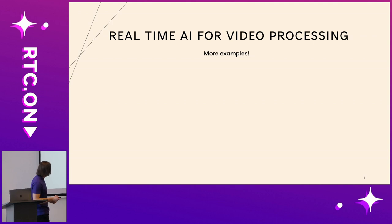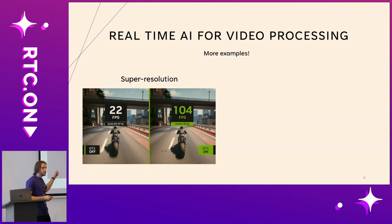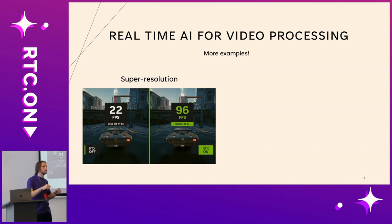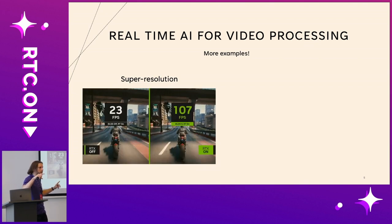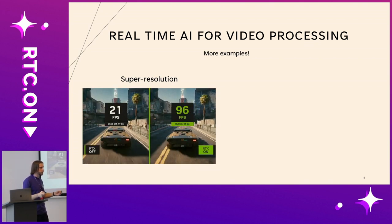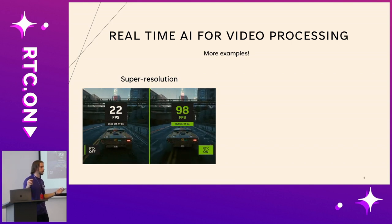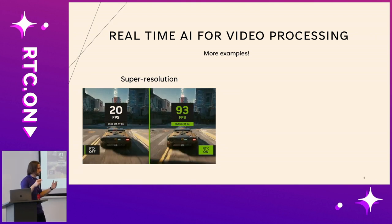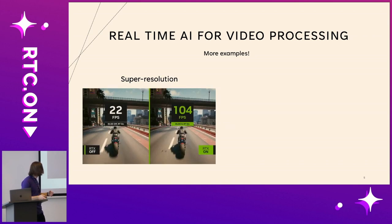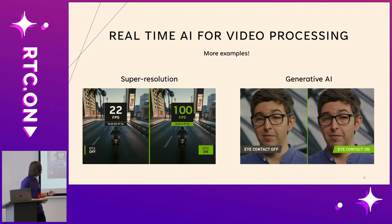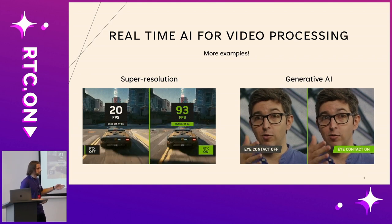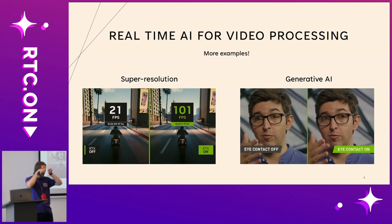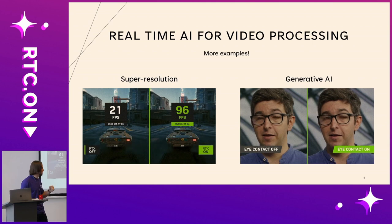How many of you are familiar with DLSS from NVIDIA? This is really cool — you can render a game at a lower resolution and upscale it using AI in real-time. It turns out it's much more efficient and much faster than rendering at higher resolutions, and it allows you to do complex stuff like ray tracing and then just upscale it using AI magic. There's also a generative tool from NVIDIA that takes your eyes from your computer screen up to your camera, so your conference calls don't feel so awkward.